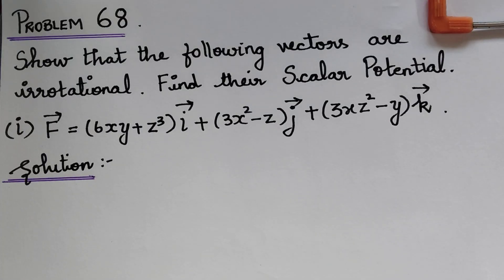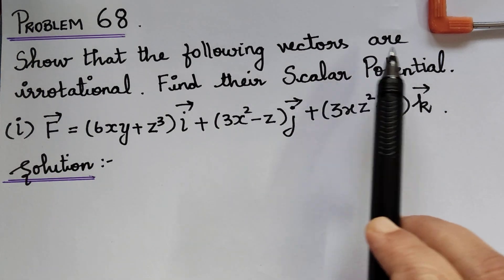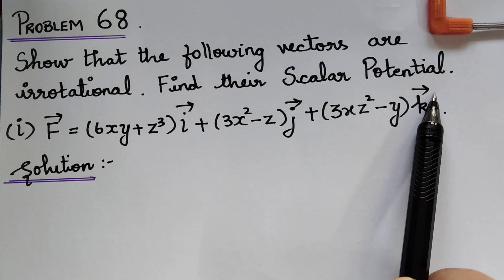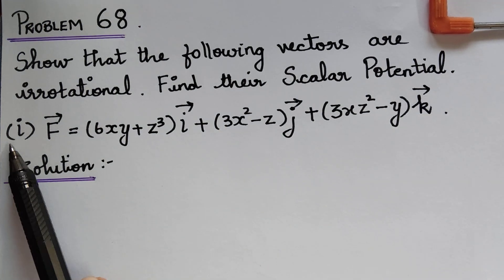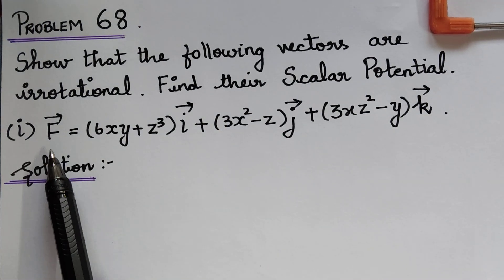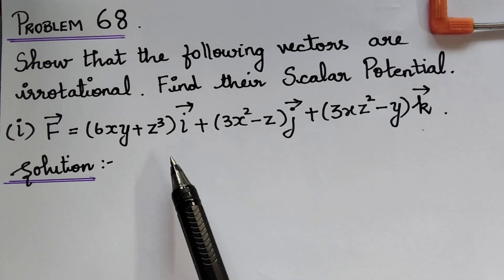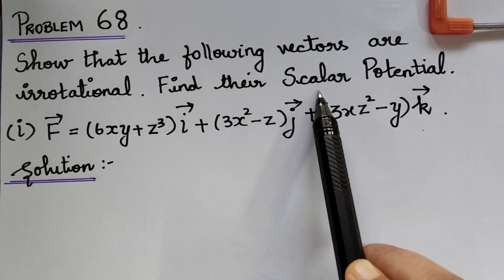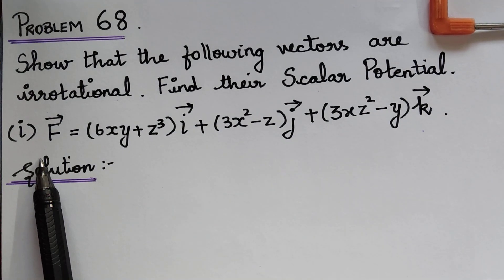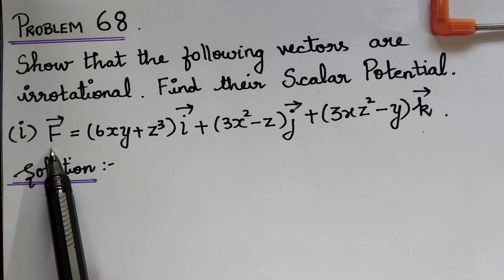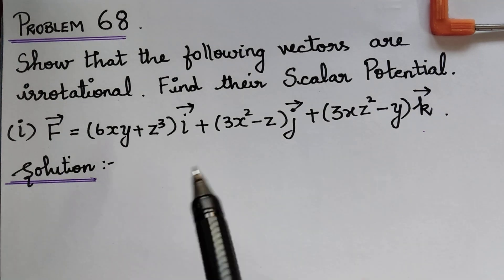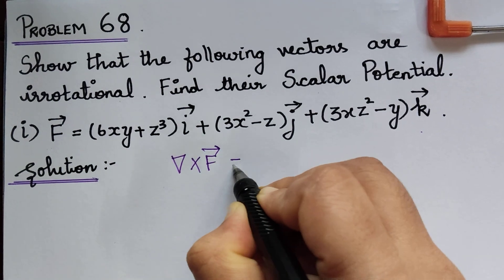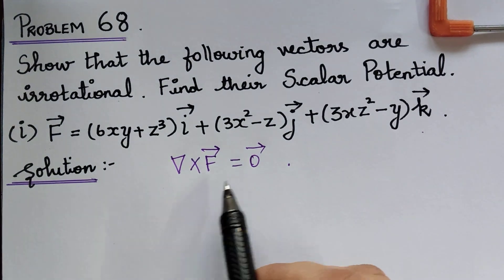Now let us see problems under this topic. We have a question which says: show that the following vectors are irrotational and find their scalar potential. There are various subdivisions. I have taken the first subdivision here. F vector is given. First of all, we have to show that this f vector is irrotational, and then find the scalar potential. In order to show that f vector is irrotational, we have to show that nabla cross f vector equals 0 vector.